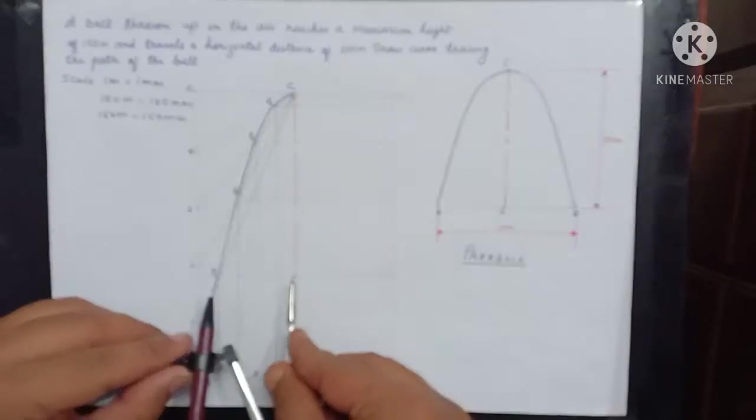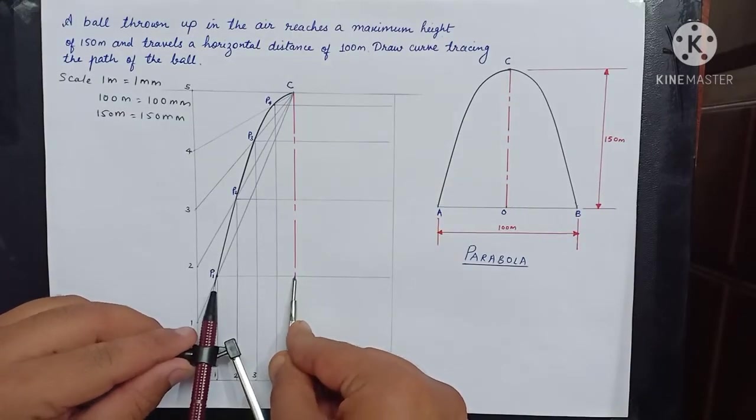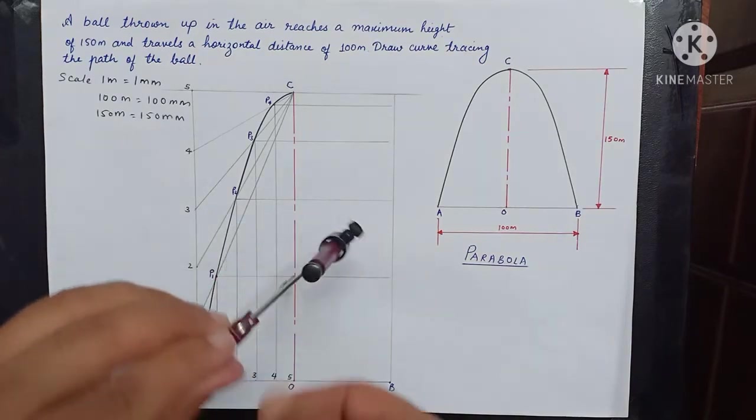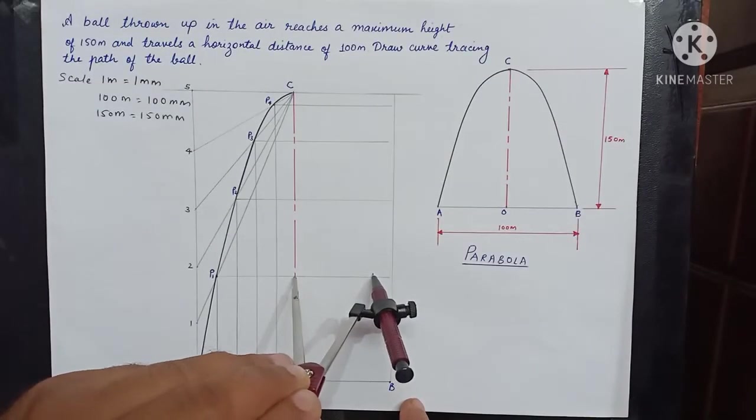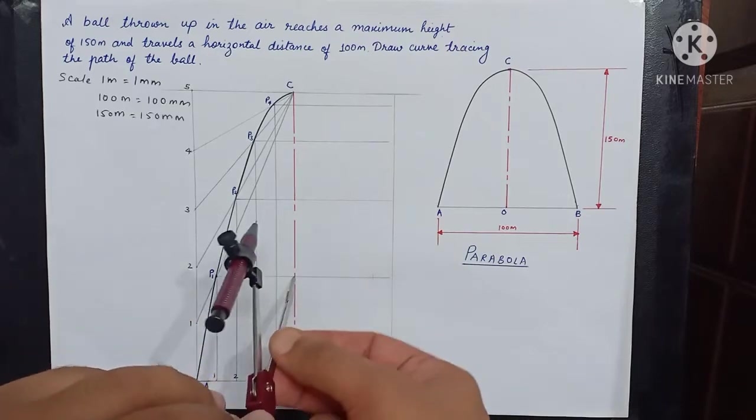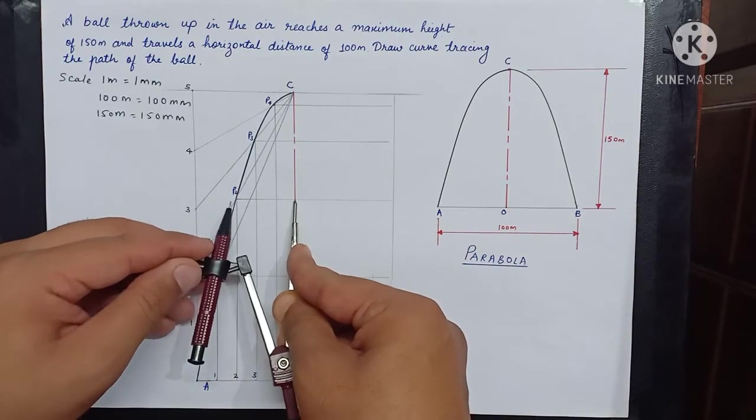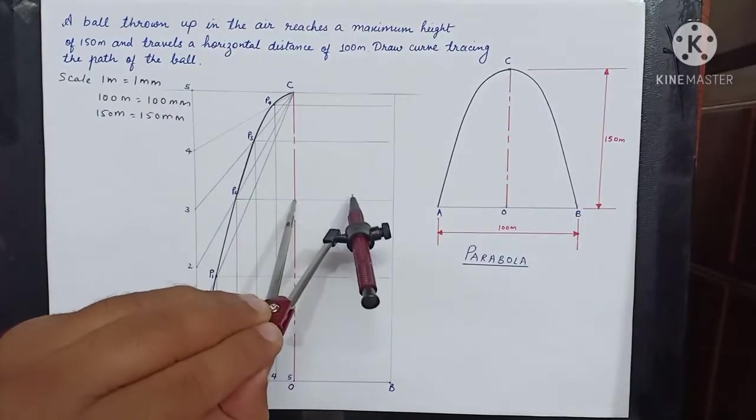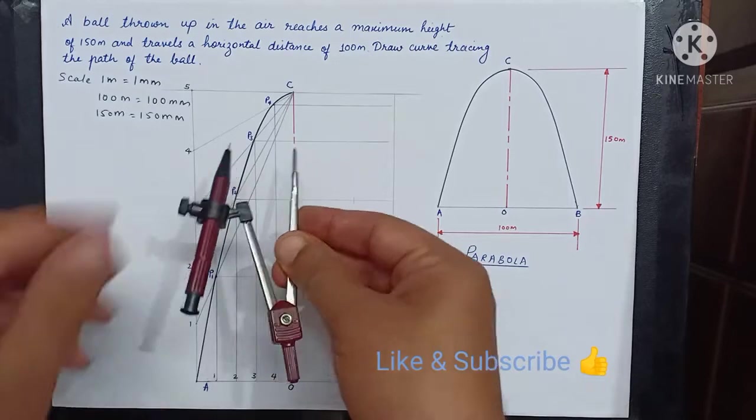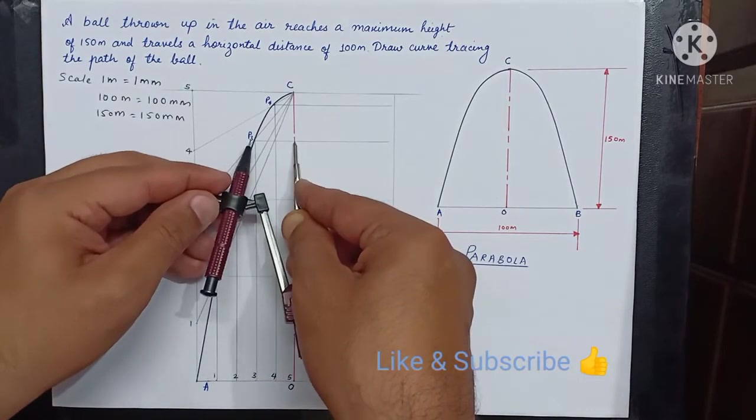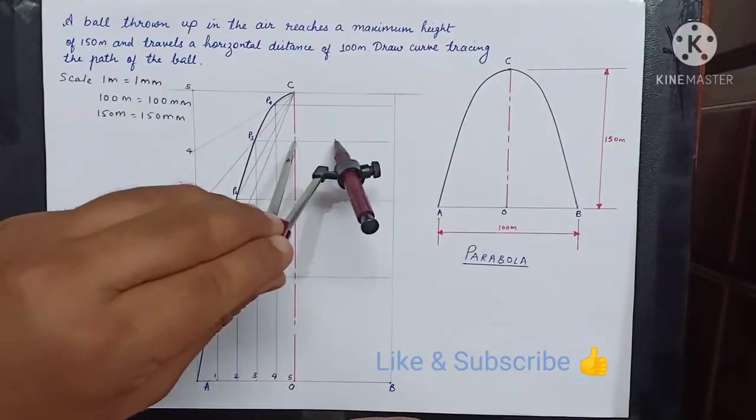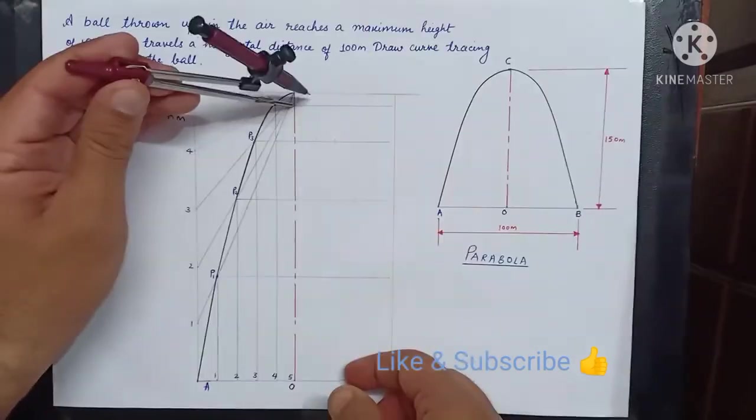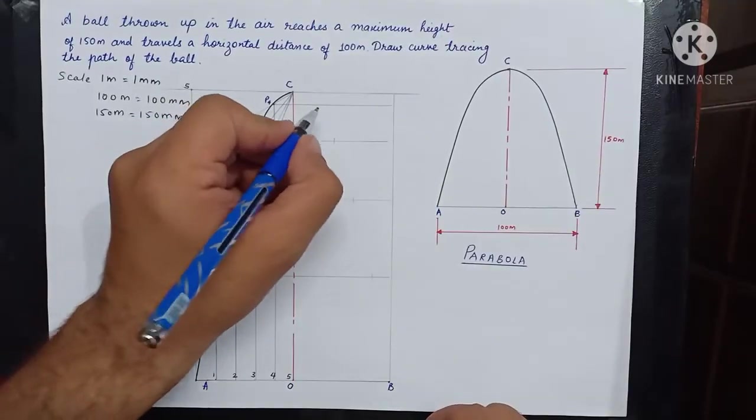Now measure the distance P1 from the axis and copy the same dimension to the next rectangle. Then measure P2 from the center axis and transfer the same dimension. And P3 and P4. Then name these points.